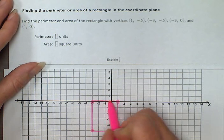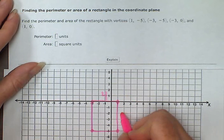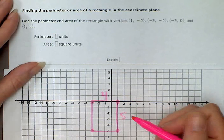So it's 1, 2, 3, 4 squares across and 1, 2, 3, 4, 5 squares down. So for perimeter,